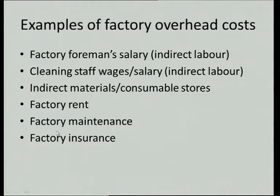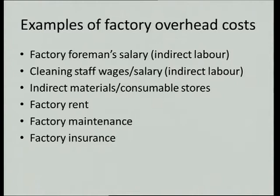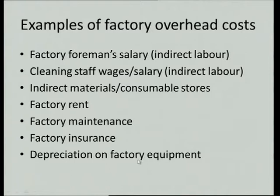Then factory insurance. You can see each time we put the word 'factory' there so you can see it's part of factory overhead costs — the rent, the maintenance, the insurance all go to the factory. Someone says factory machinery — remember, we're talking about costs. Machinery is an asset. So we're going to talk about depreciation on the factory machinery. Factory machinery is not an overhead cost, but the depreciation on factory machinery is an overhead cost. The equipment is an asset, but the depreciation on it is a cost — please don't get confused with that.